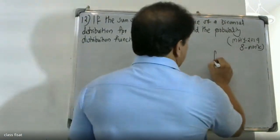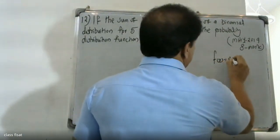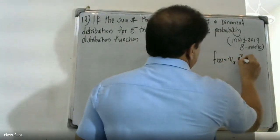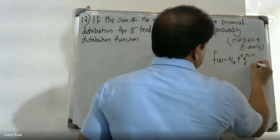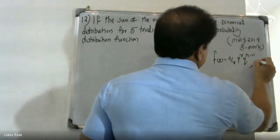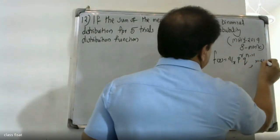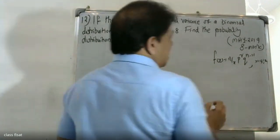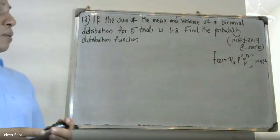The binomial distribution function is f(x) = nCx * p^x * q^(n-x), where x equals 0, 1, 2, ... n. This is the standard binomial distribution formula.